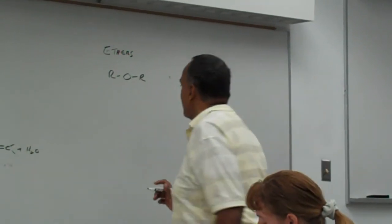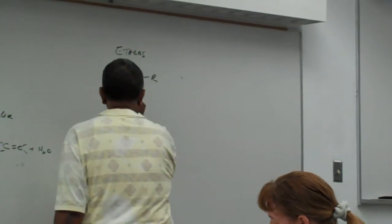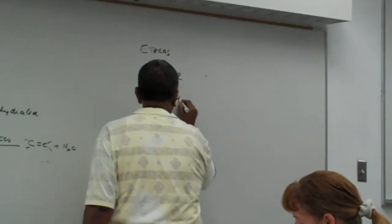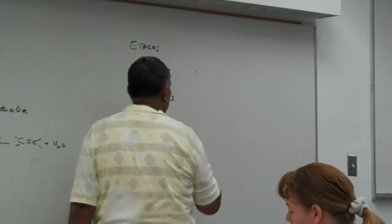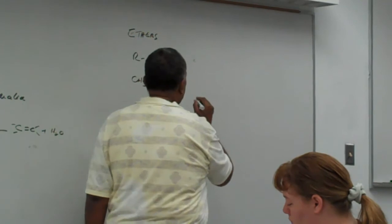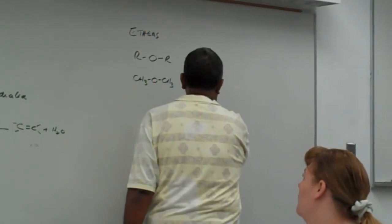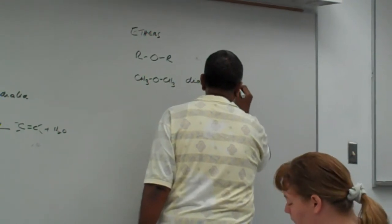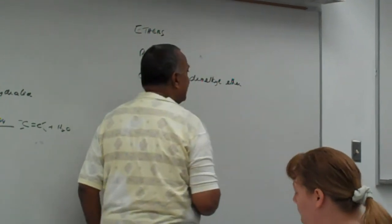Now, how do we name them? The simplest one is when the two R groups are CH3, and we say dimethyl ether.